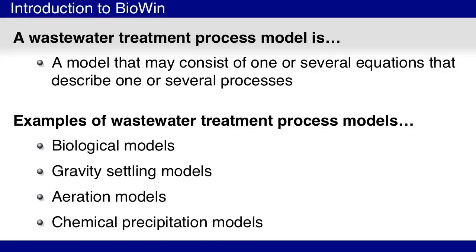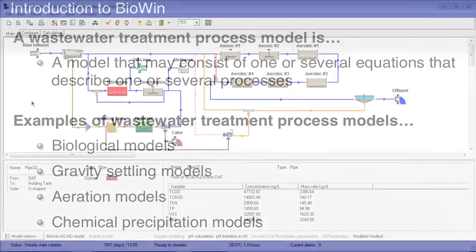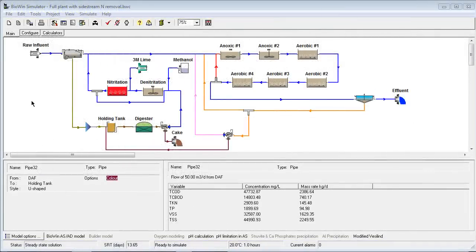A model may consist of one or several equations that describe one or several processes. For example, here we have a process flow schematic that consists of many models.